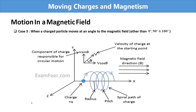These are the important points in Case 3. In the figure, you can see the motion of a charged particle in a magnetic field where the magnetic field is in the x direction. At the starting point, the velocity of the particle is v and θ is the angle between velocity and magnetic field. In the figure, vcosθ is in the direction of the magnetic field, vsinθ is perpendicular to the magnetic field and responsible for circular motion, and you can also see the helical path of the particle.